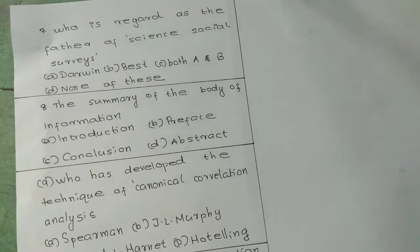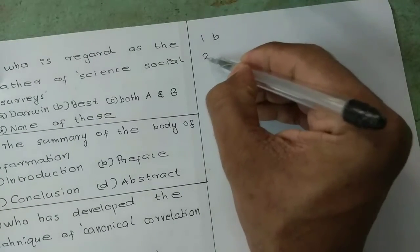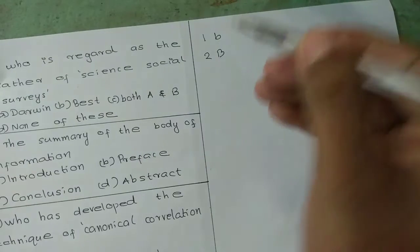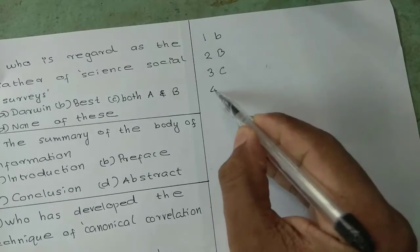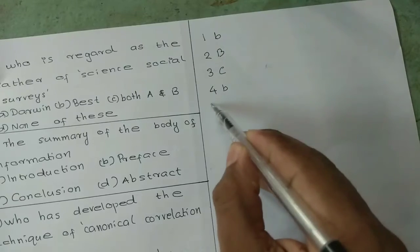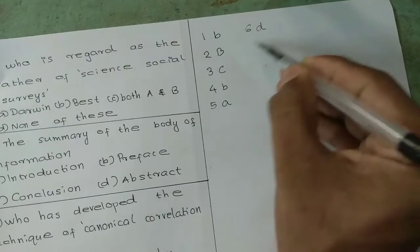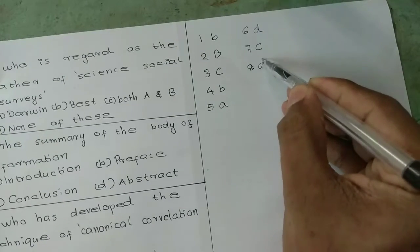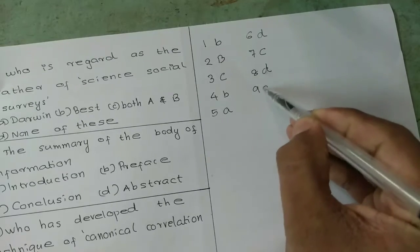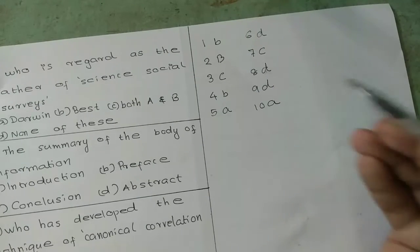Now we will go to the answer key. Number 1, the answer is option B. Number 2, the answer is option B. Number 4, the answer is option A. Number 5, the answer is option A. Number 6, the answer is option D. Number 7, option C. Number 8, option D. Number 9, option D.